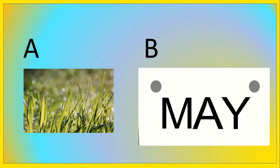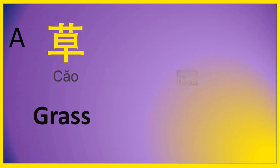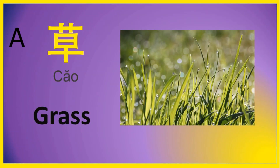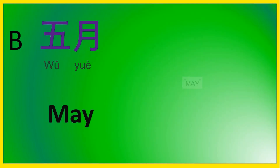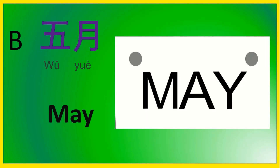哪一个是草? 草, 草. It's A — 草, grass. And B is 五月, May. 月 means month. 五 is five. So May is the fifth month — in Chinese we call it 五月. 月, 月.